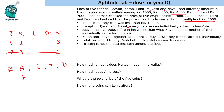Neither Karan nor G1 can individually afford Litecoin, so Litecoin is priced more than 5000. Karan and G1 together can afford to buy Terra but cannot afford it individually. Since Karan has 1000 and G1 has 5000, together they have 6000, so Terra is priced at 6000.